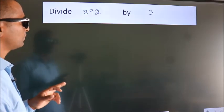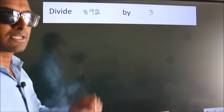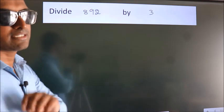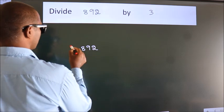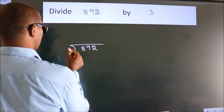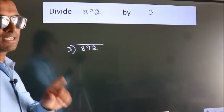Divide 892 by 3. To do this division, we should frame it in this way: 892 here, 3 here. This is your step 1.